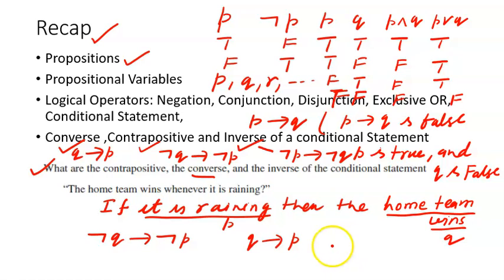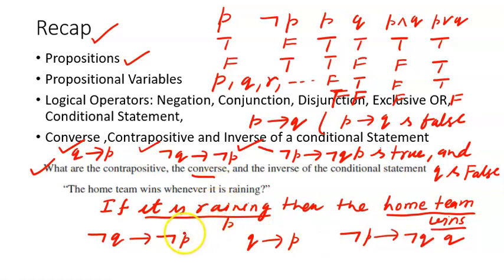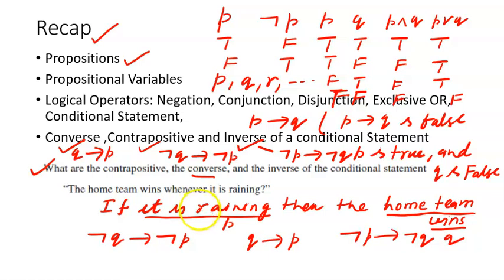The inverse is ¬p implies ¬q. Since ¬p is 'it is not raining,' the inverse translates to: 'If it is not raining, then the home team does not win.' You can pause the video, try writing it yourself, and match your answer.